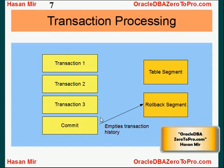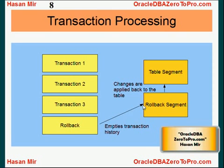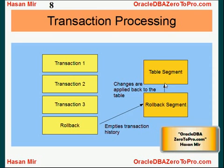If the user issues a rollback command instead, all the changes stored in the rollback segment are applied back to the table. In our example, the name Scott will be put back into the first name column and Larry will be removed. The same applies to anything that was deleted — that row would be stored in the rollback segment and put back into the table — and anything that was inserted will be removed. The table will return to the same state it was before all these transactions happened.